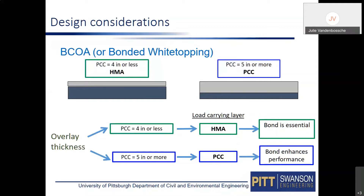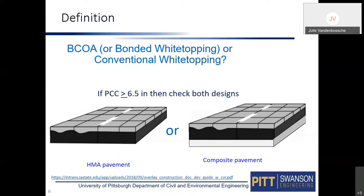For thin bonded concrete overlays, using conventional design procedures that ignore bonding will underestimate design life. If relying on the asphalt bond for a thin overlay, switch to tools specific for bonded concrete overlays — such as the Colorado design procedure, the ACPA tool, or AASHTOWare Pavement ME with the short joint module. Without the short joint module, Pavement ME is designing as a conventional white topping rather than a true bonded overlay.